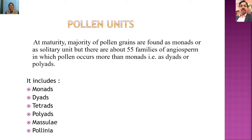Pollen units are the result of meiotic division in the pollen mother cell. The pollen mother cell undergoes meiosis and forms four cells. At the youngest stage these four cells remain united, but at maturity they get separated from each other and behave as independent pollen grains.